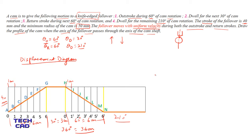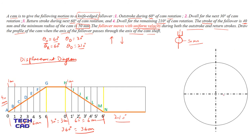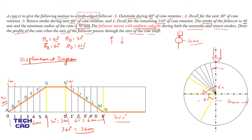Now you are going to make the cam profile using this displacement diagram. First, draw a circle of 50 mm radius — the minimum cam radius — and draw the axis line. This is a knife-edge follower whose axis passes through the cam axis. Divide the cam into outstroke (60°), dwell (30°), and return stroke (60°), then divide both the 60-degree outstroke and 60-degree return stroke into 6 equal parts of 10 degrees each.